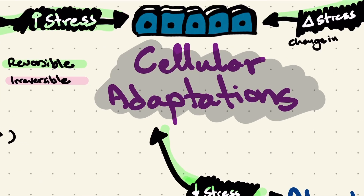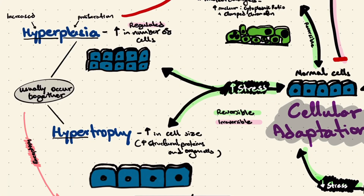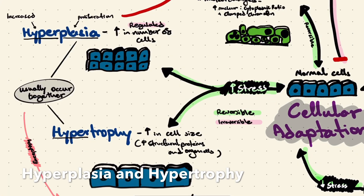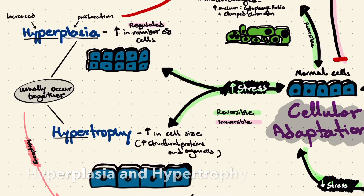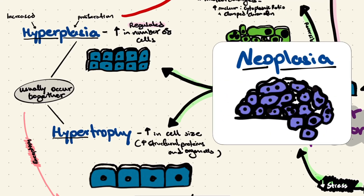Cellular adaptations are a response to stress. When cells experience increased stress, they can undergo hyperplasia and/or hypertrophy. Hypertrophy is an increase in cell size, achieved by an increase in structural proteins and an increase in the number of organelles. Hyperplasia, on the other hand — hyper meaning increased, plasia meaning proliferation — is a regulated increase in the number of cells. This is an important distinction when comparing it to neoplasia, which we will discuss shortly.